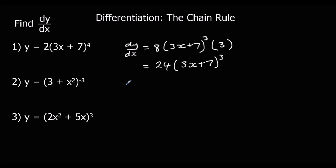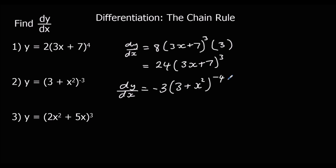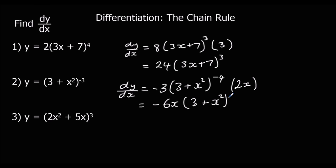Question 2: we differentiate around the bracket, so multiply by negative 3, take one off the power so that goes to negative 4, and multiply by the bracket differentiated which is 2x. Simplifying: negative 3 times 2x is negative 6x, which goes outside the bracket, and the bracket stays as it is.